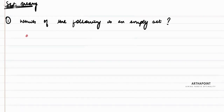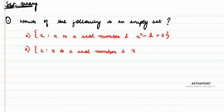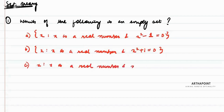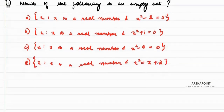The options given are: (A) x such that x is a real number and x² - 1 = 0; (B) x such that x is a real number and x² + 1 = 0; (C) x such that x is a real number and x² - 9 = 0; and (D) x such that x is a real number and x² = x + 2. Try this question once, then we will see what the answer should be.